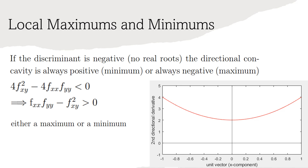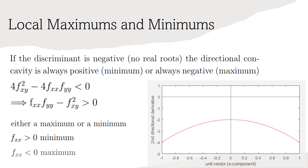Now, all we need to do to delineate between the two possibilities is sample a point on our quadratic. This will show us if our function is concave up in all directions at the critical point, indicating a minimum, or concave down in all directions, indicating a maximum. Therefore, if f sub xx is greater than 0, the critical point is a relative minimum. Whereas, if f sub xx is less than 0, then the critical point is a relative maximum.